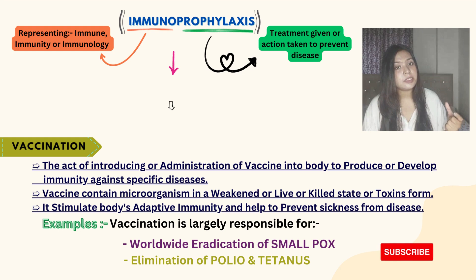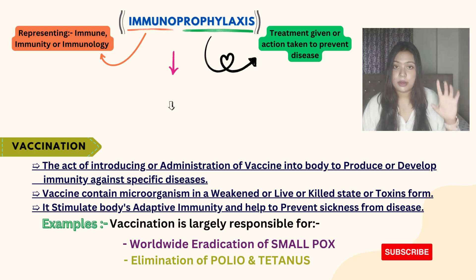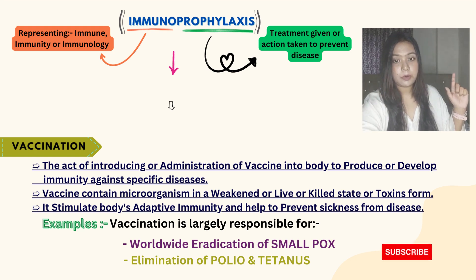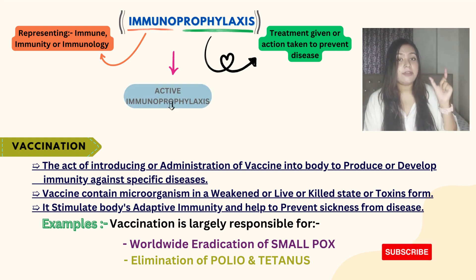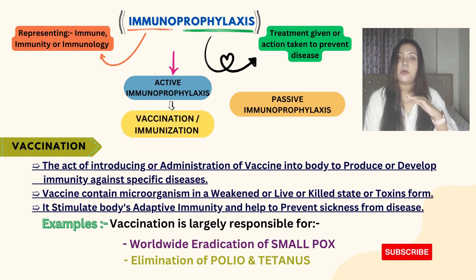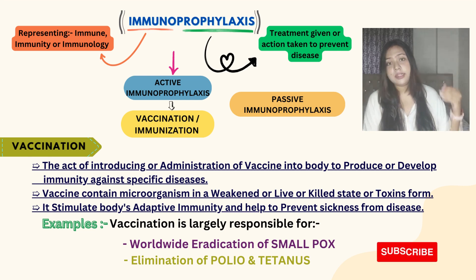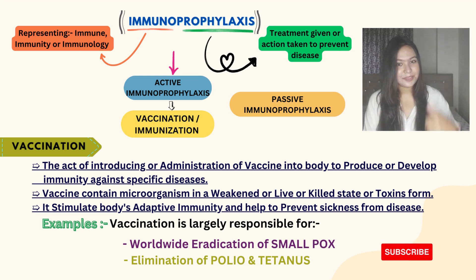Our body gives an immune response which helps to get protection against that particular type of viral disease. Immunoprophylaxis is further classified into active and passive, and under active comes vaccination and immunization. Please read the things given in this slide — I hope it is clear to you.